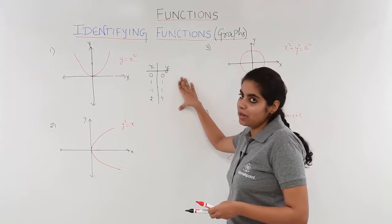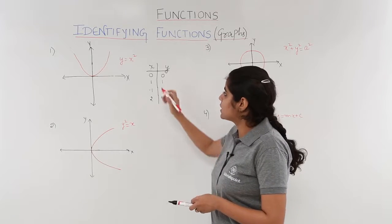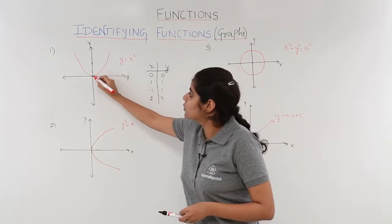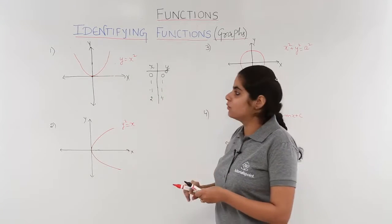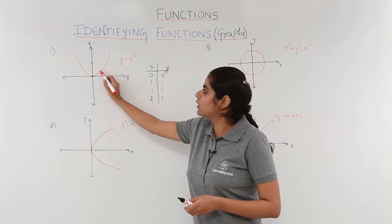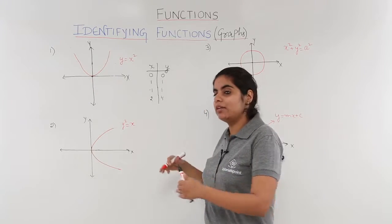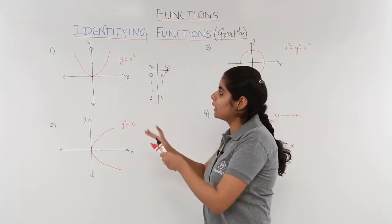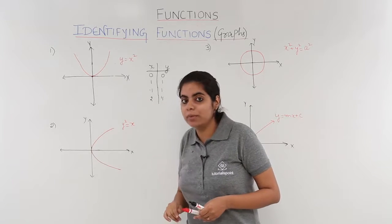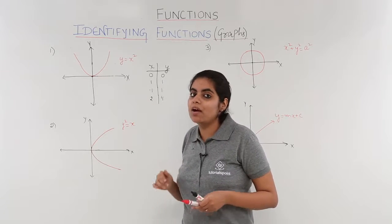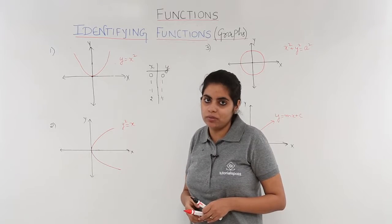So we assume some values of x, solve to obtain values of y, and define different points such as (0, 0), (1, 1), (−1, 1), and so on. Then we join them to obtain a graph. Now this graph is already given to me and I have to check whether this is a function or not.